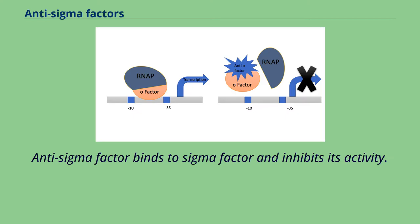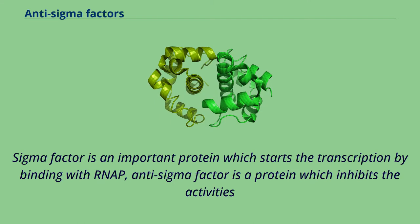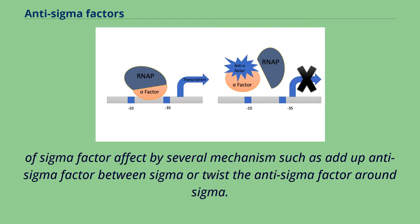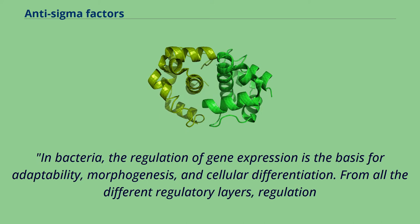Anti-sigma factor binds to sigma factor and inhibits its activity. Sigma factor is an important protein which starts the transcription by binding with RNAP. Anti-sigma factor is a protein which inhibits the activities of sigma factor by several mechanisms, such as wedging the anti-sigma factor between sigma or twisting the anti-sigma factor around sigma.